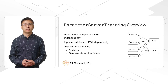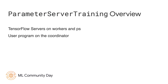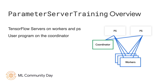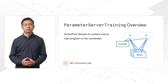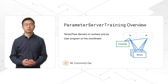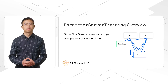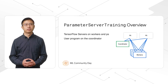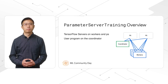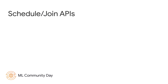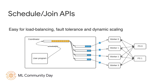It is scalable and can tolerate worker failure. In TensorFlow 2, we've adopted a fairly different approach to implement parameter server training. We call it single client setup. In this setup, the user program runs on the coordinator. Workers and parameter servers run a standard TensorFlow server, which passively executes requests dispatched from the coordinator. We have also developed a set of new APIs to support this setup.